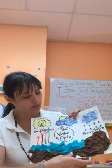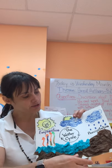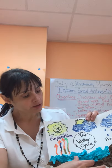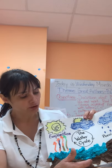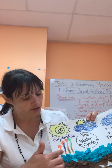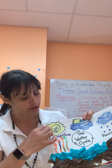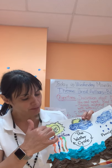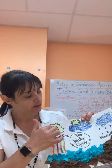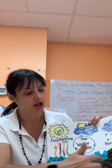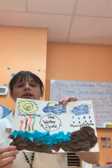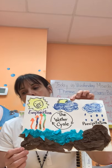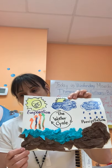The water goes back to the rivers, oceans, and lakes, and then the same process starts again — vaporization, then condensation, then precipitation — all over again. And that is the water cycle process.